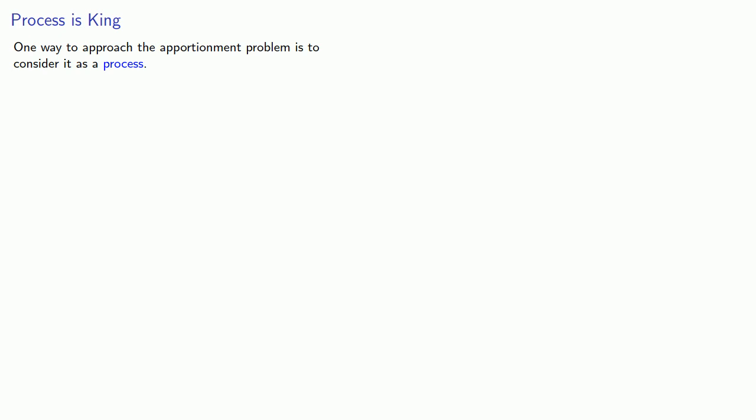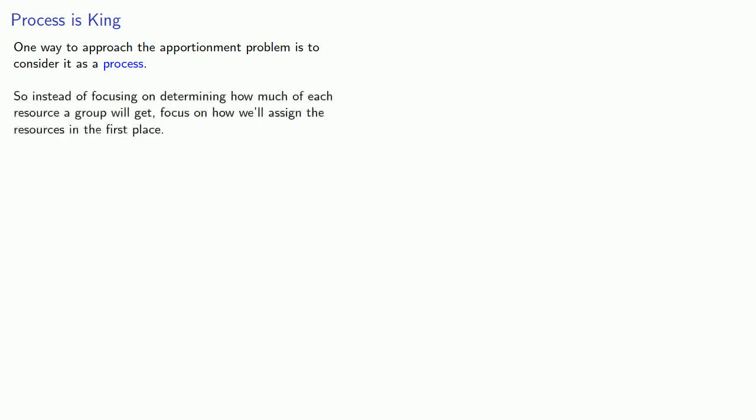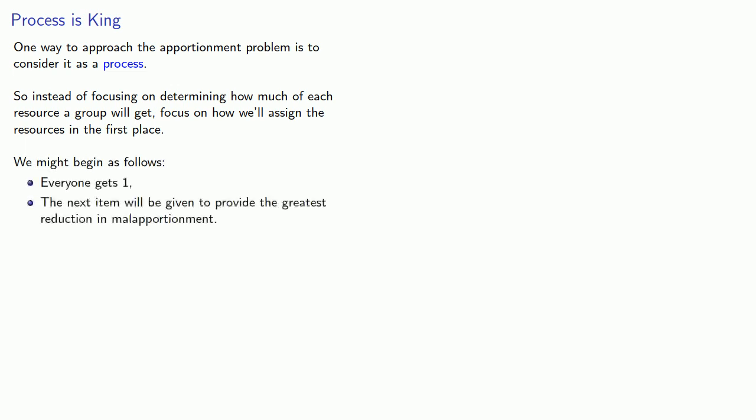One way to approach the apportionment problem is to consider it as a process rather than an end goal. So instead of focusing on determining how much of each resource a group will get, focus instead on how we'll assign the resources in the first place. And we'll begin as follows: everyone gets one, and the next item will be given to provide the greatest reduction in malapportionment.